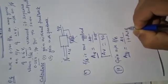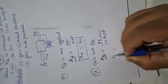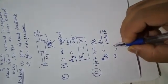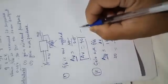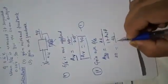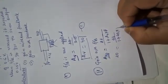The gain with feedback equals 20. Using Av equals 40 from equation 1, we have 20 equals 40 divided by 1 plus 40 times beta. We have to find the feedback factor beta.